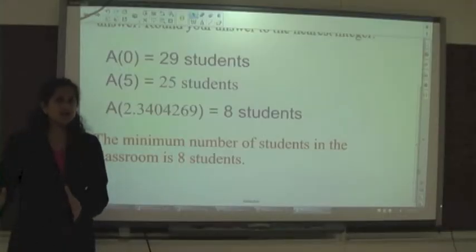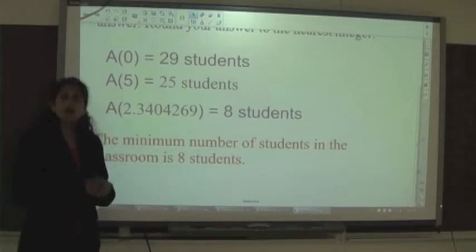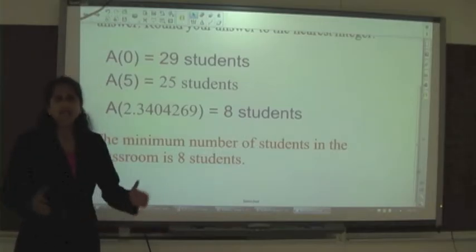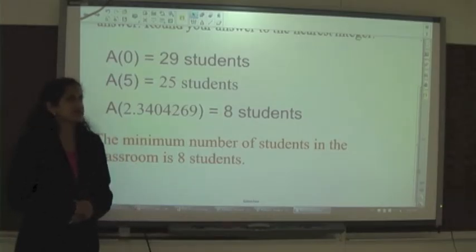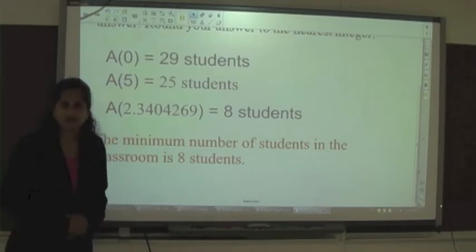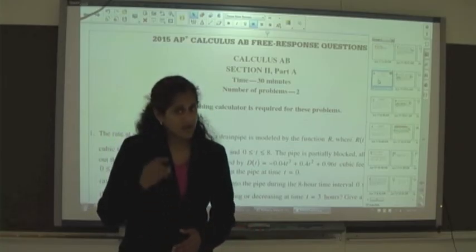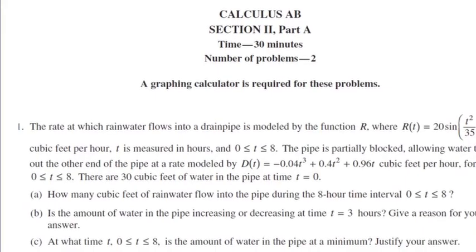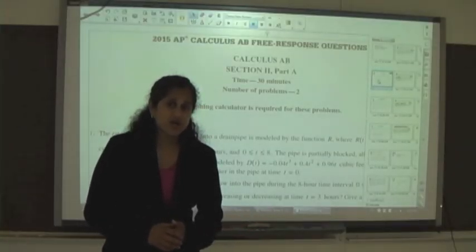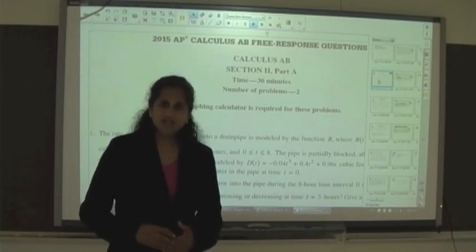So I had 29 students to start, 25 students at the end of five minutes, and somewhere in between we ended up with 8 students — that's the minimum number. If you're watching this video, you're probably studying applications of integrals or the AP exam. I highly suggest you do the 2015 free response question number one in the calculator section. We didn't cover letter D in this video, but letters A through C are almost exactly the same. Good luck — I hope this video was helpful.